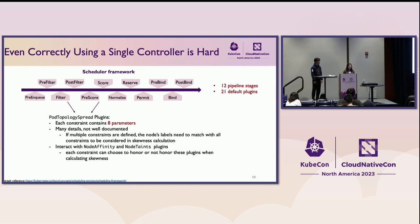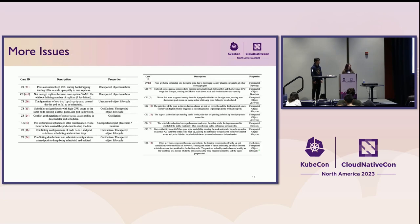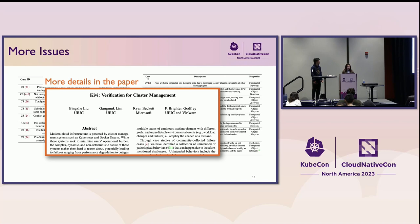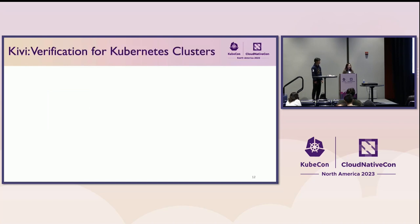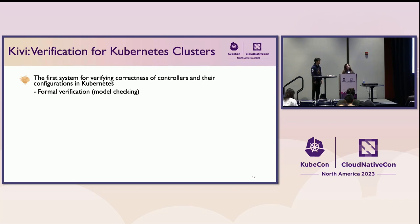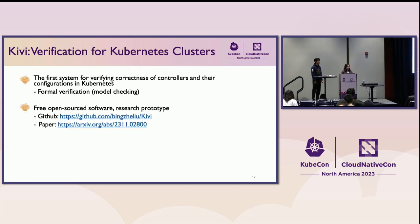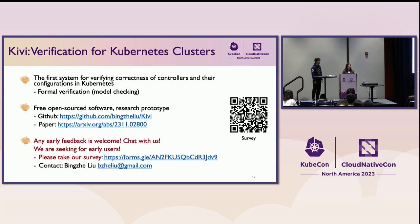I actually only understood some of the details when I looked into the actual scheduler code — it's pretty complicated. So with this observation, we propose our system Kiwi, which is the first system for verifying the correctness of controllers and their configurations in Kubernetes, focused on non-trivial interactions. We use formal verification — in particular, model checking. This is free open-source software and a research prototype. We released our code on GitHub and our paper on arXiv. We really appreciate any early feedback.